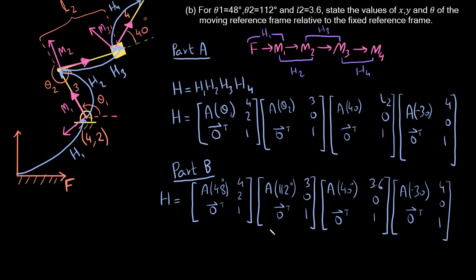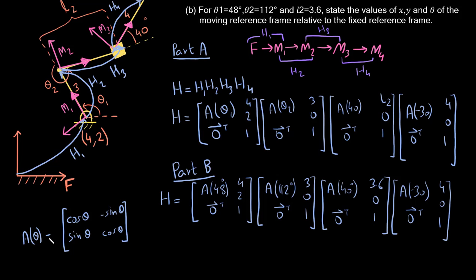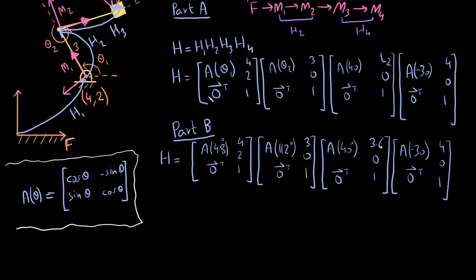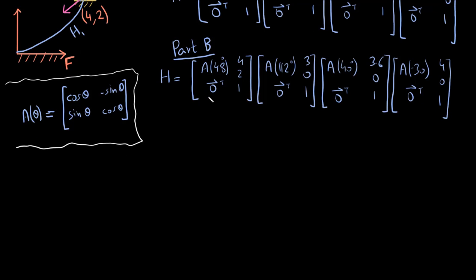Moving to Part 2: recall that the rotation matrix A(theta) takes the form [cos(theta), −sin(theta); sin(theta), cos(theta)]. This is what I mean whenever I write A(theta). Now, once I multiply everything out, I obtain the final homogeneous transform.